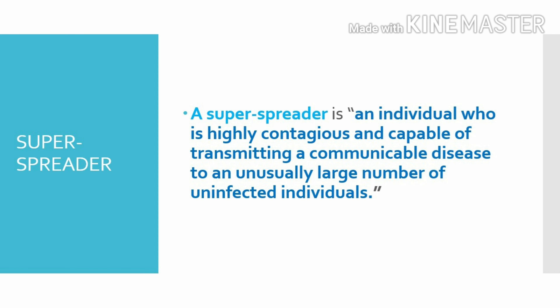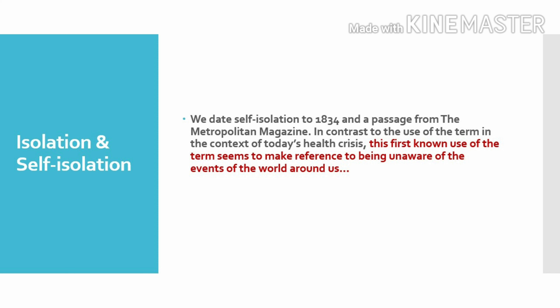Next term: super spreader. It means an individual who is highly contagious and capable of transmitting a communicable disease to an unusually large number of uninfected individuals. For example, in the recent case in Kerala, contact with already-infected persons and possible infection from foreign returnees are seen as causes of virus spread. India's first case of COVID-19 was confirmed in Thrissur, Kerala, on 30th January 2020. As of 1st May 2020, there were 497 confirmed cases, 392 recoveries, and 3 deaths. Kerala has the lowest mortality rate of 0.6% among all Indian states, and its success in containing COVID-19 has been widely praised — for the first time after 45 days, Kerala reported no new COVID-19 positive cases on 1st May 2020.